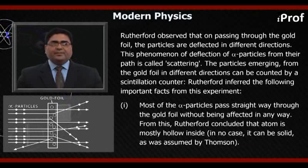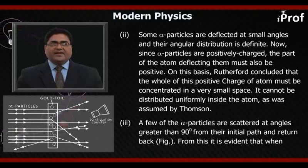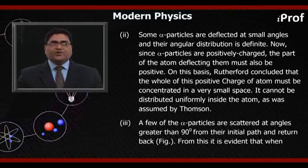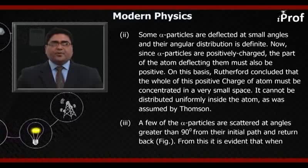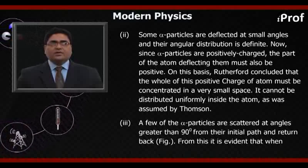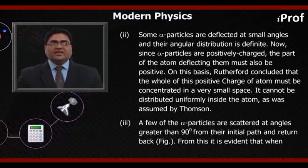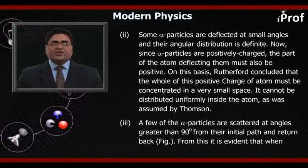In no case can the atom be solid, as was assumed by Thomson. Second, some alpha particles are deflected at small angles and their angular distribution is definite. Since alpha particles are positively charged, the part of the atom deflecting them must also be positive. On this basis, Rutherford concluded that the whole of the positive charge of the atom must be concentrated in a very small space, and cannot be distributed uniformly inside the atom, as was assumed by Thomson.